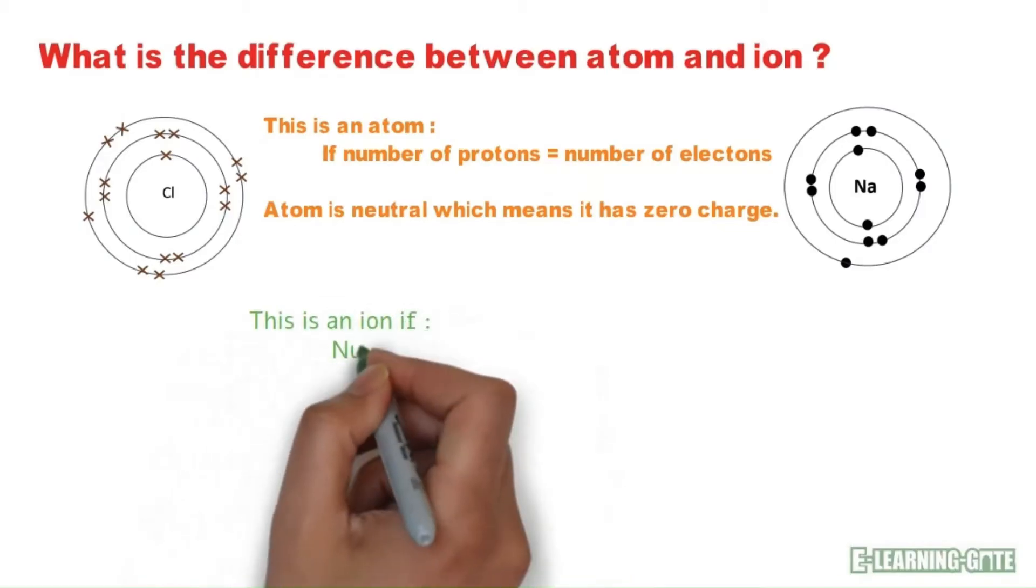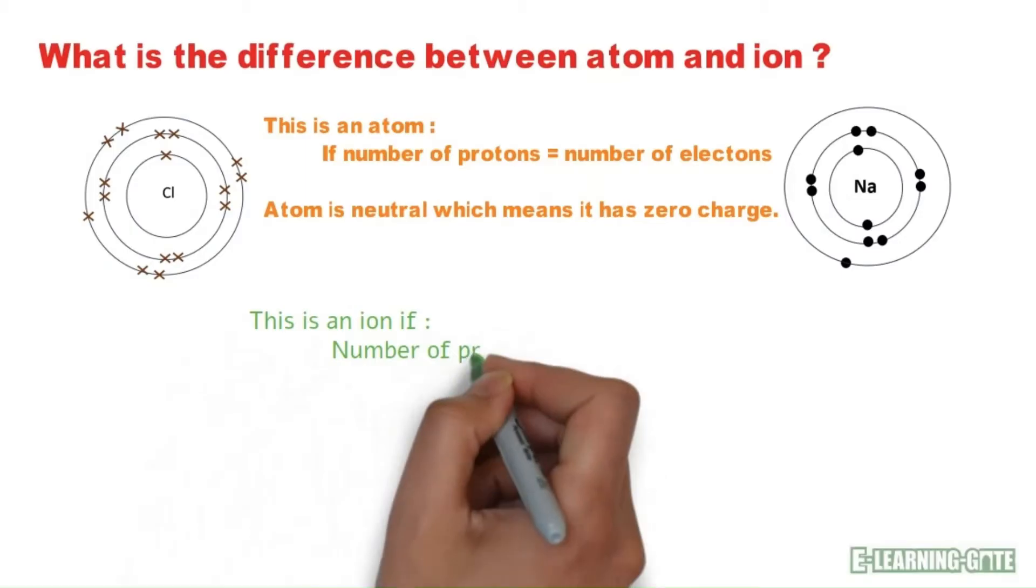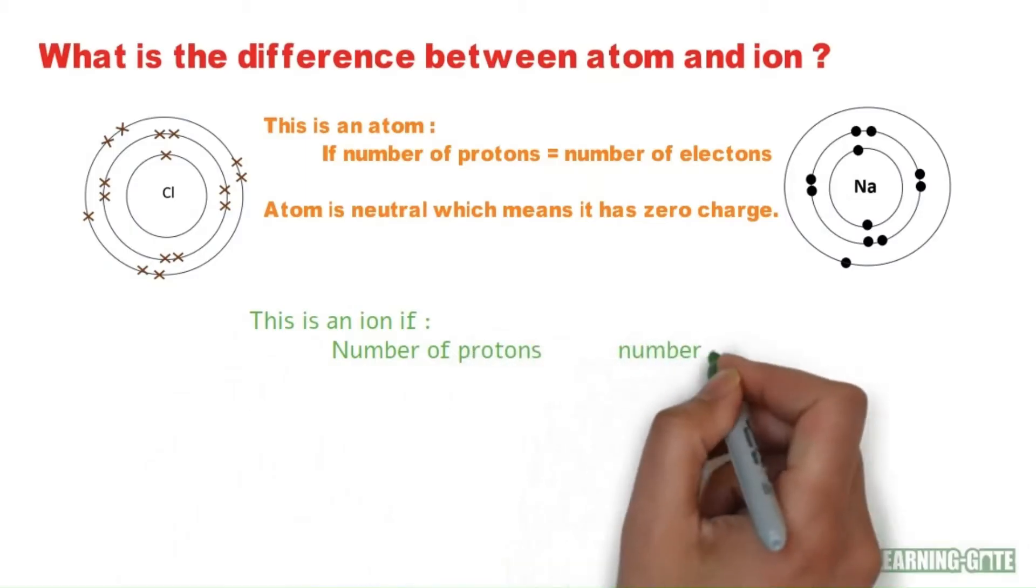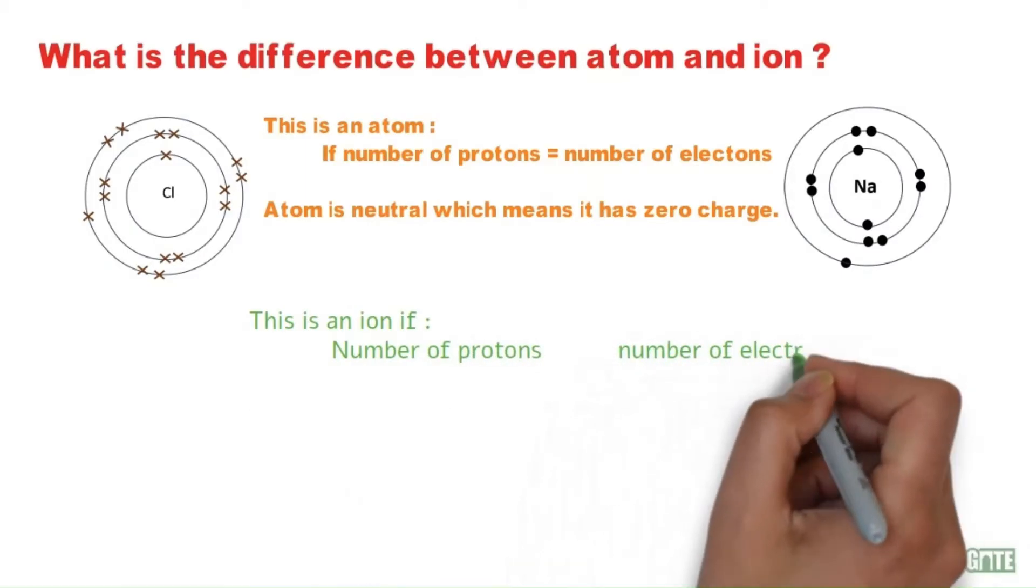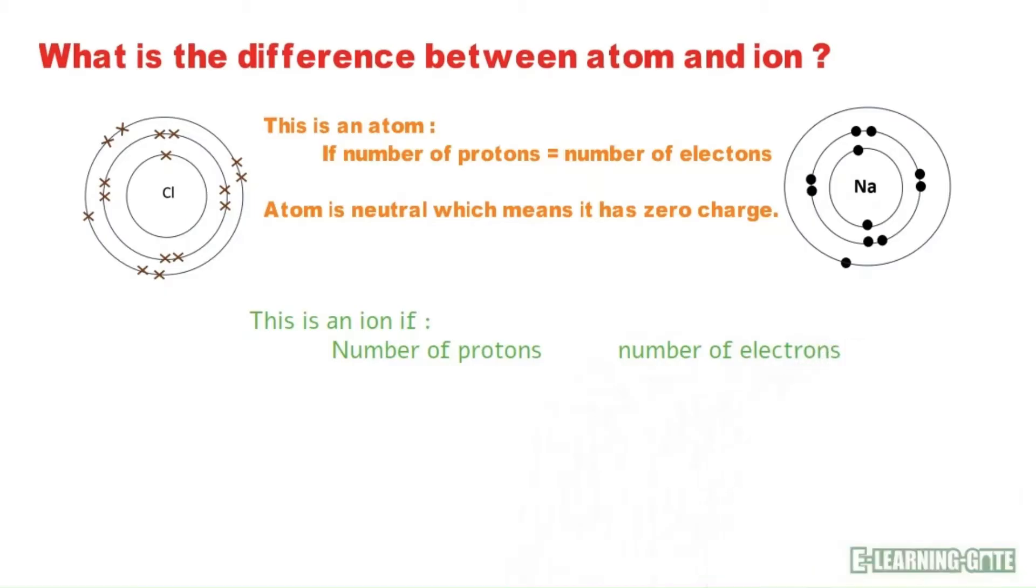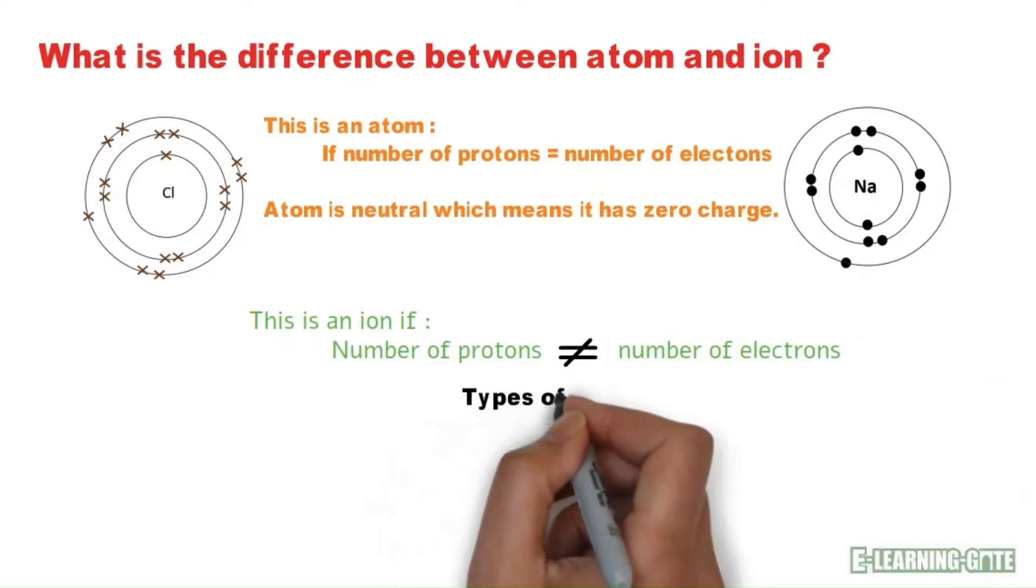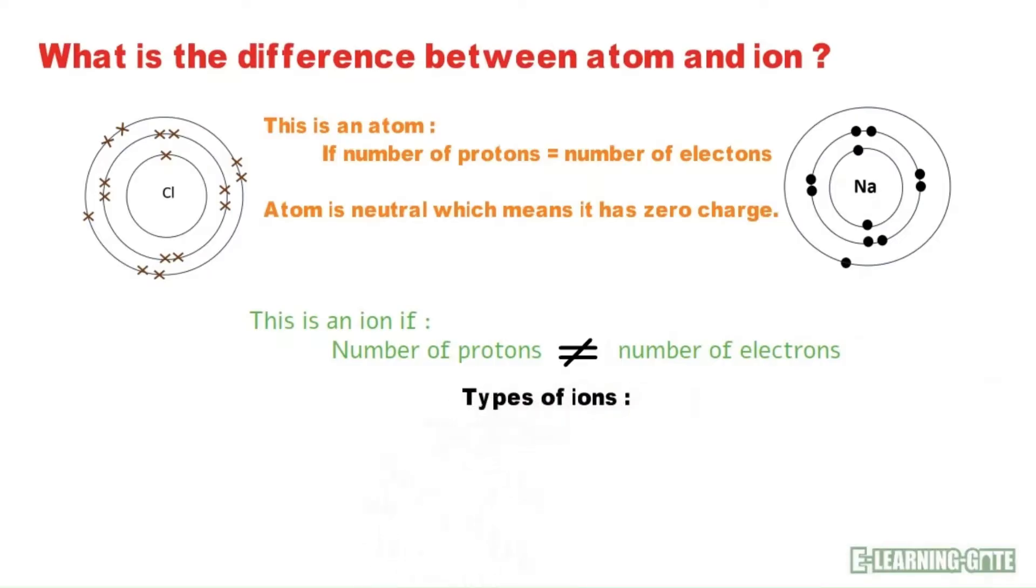Sometimes, electrons can be gained or lost, turning neutral atoms into charged particles. These charged particles are known as ions. In ions, the number of protons and electrons are not equal.